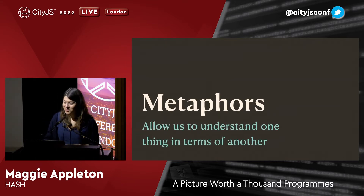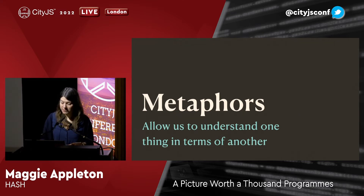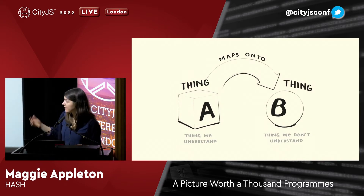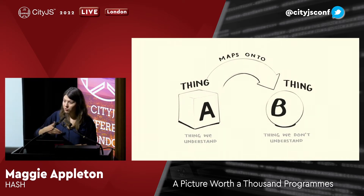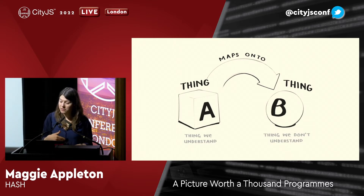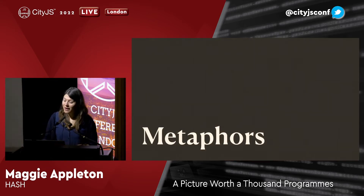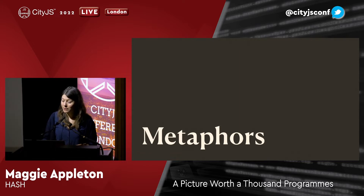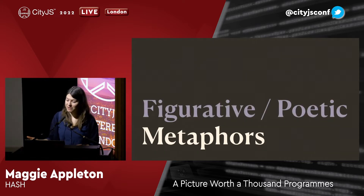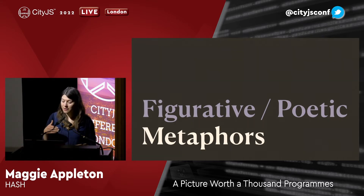So let's start with metaphors. Just to make sure we're all on the same page, let's establish that metaphors are thinking tools that allow us to understand one thing in terms of another. We have thing A that we understand, and thing B that we don't, and we map the qualities of thing A onto thing B. So if I say corruption is a disease, you map what you know about diseases onto corruption — that corruption spreads easily, it's difficult to overcome, and it can threaten the health of a society. Now in the context of programming, I don't mean fanciful creative metaphors like taking the road less traveled — those are called figurative or poetic metaphors, and they're the sort we're warned not to use in technical tutorials because elaborate, poorly chosen ones can be more confusing than helpful.